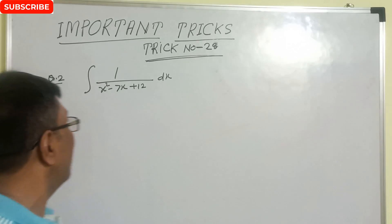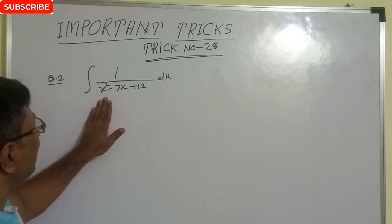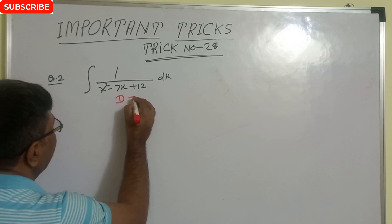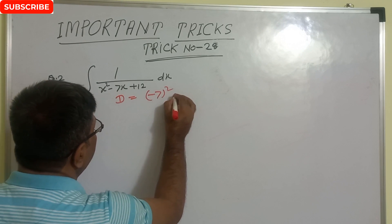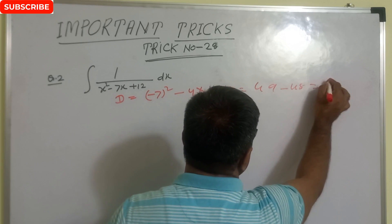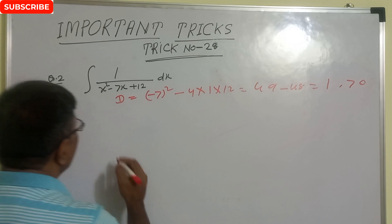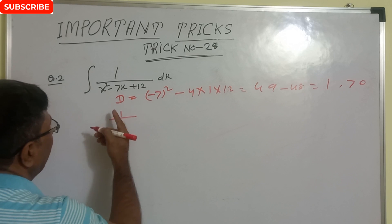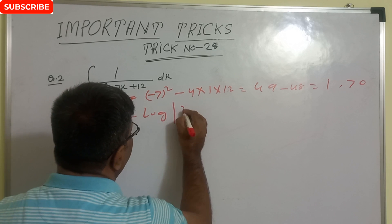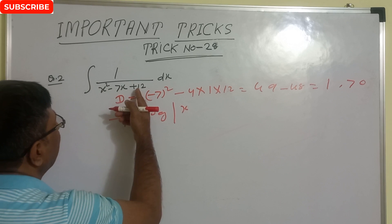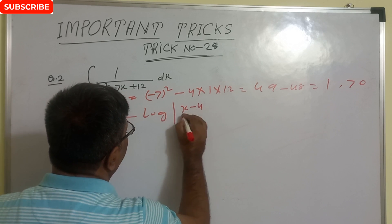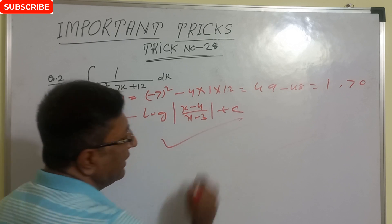Integration of 1 upon x squared minus 7x plus 2 — this is a quadratic equation. For this type of question, first find the discriminant. Discriminant is b squared minus 4ac: minus 7 squared minus 4 into 1 into 2, so 49 minus 8 equals 41 — wait, 49 minus 48, that is 1. Discriminant is greater than 0, so the rule is 1 upon root of discriminant, discriminant is 1 so 1 by 1, and then log of (x minus the greater root) upon (x minus the smaller root). The roots are minus 4 and minus 3, so the answer is log of (x minus 4) upon (x minus 3). This is the correct answer.